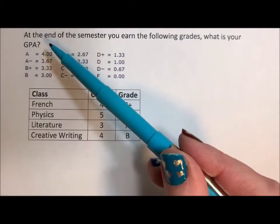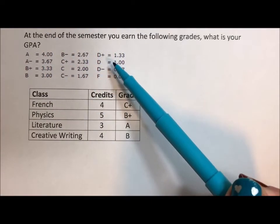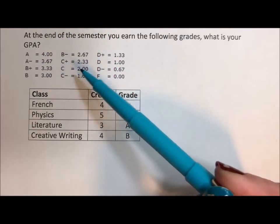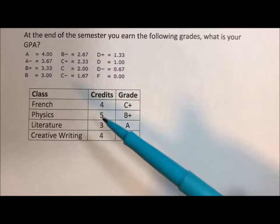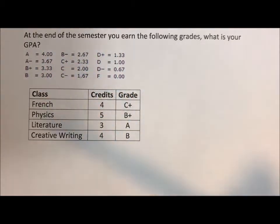So here we have what you earn. Most people know that A, B, C, D, F gives you a 4, 3, 2, 1, and 0, but I have the pluses and minuses included.